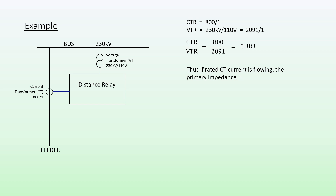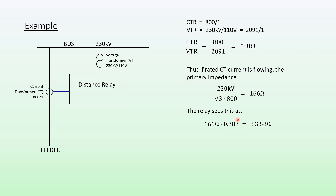If rated current is flowing — that is, 800 amps in this feeder — the primary impedance is equal to 23 kV divided by root 3, times 800, which equals 16.6 ohms. The relay sees this as 16.6 times our CT ratio divided by VT ratio constant, which gives us 63.58 ohms.